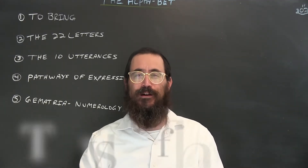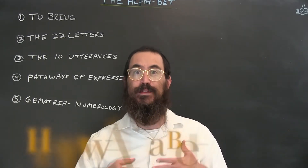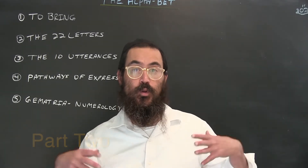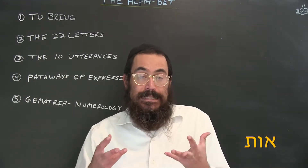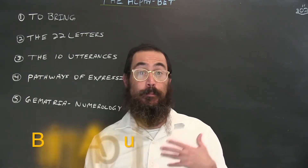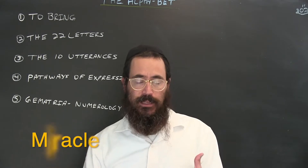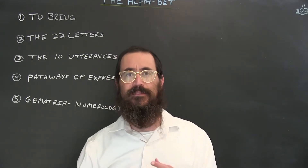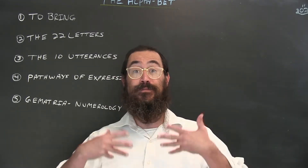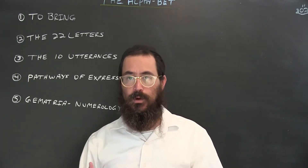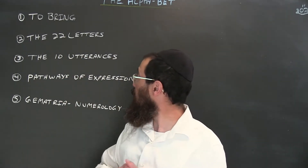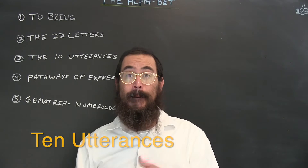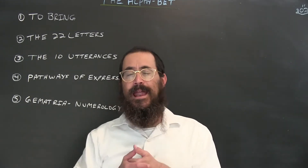Welcome to part two of our Mystery of the Alphabet introduction. In our previous class we delved into the meaning of 'otiot' — 'ot' meaning to bring about, meaning a miracle and a sign. We spoke about the 22 letters as being significant in their shape and in their vibrational energy they transmit in the world. We left off speaking about the 10 utterances that God created the world through, called 'asara ma'amarot' — 10 sayings.